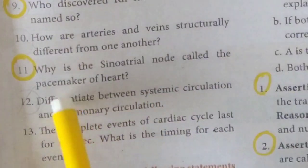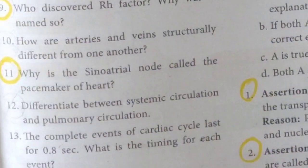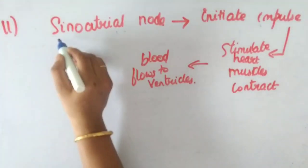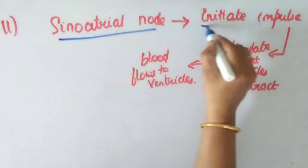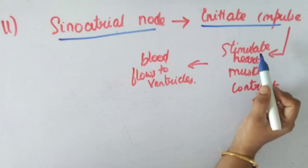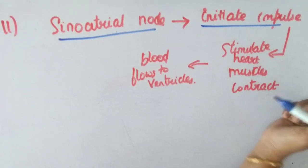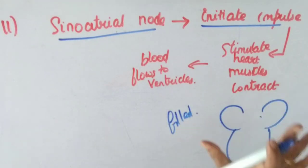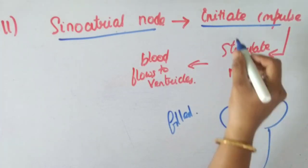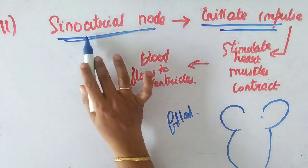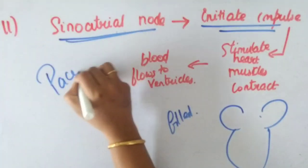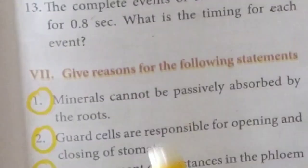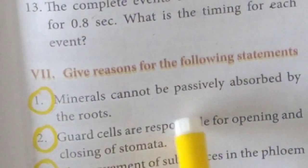Question 7: Why is the Sino-Atrial node called the pacemaker of the heart? When the auricles are filled with blood and relax — arterial diastole — the Sino-Atrial node initiates an impulse. It stimulates the heart muscles to contract, driving blood flow into the ventricles. That is why the Sino-Atrial node is called the pacemaker of the heart.